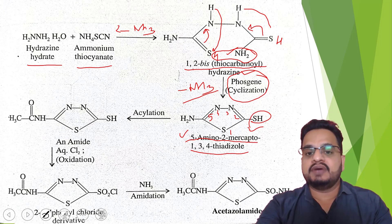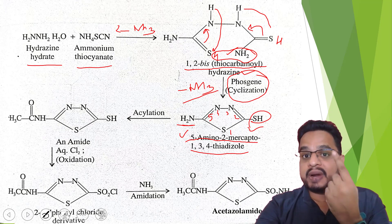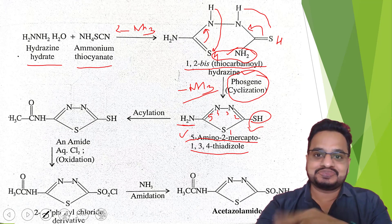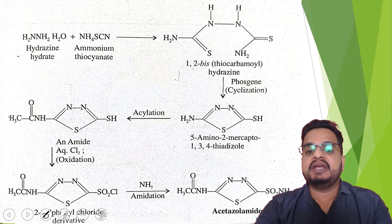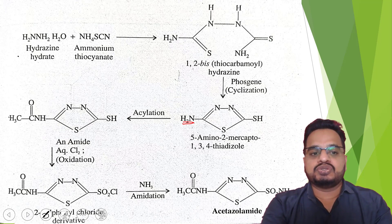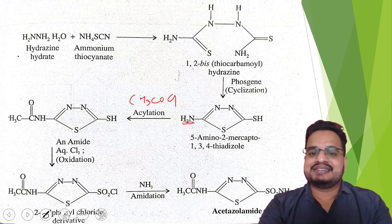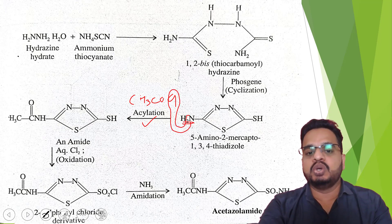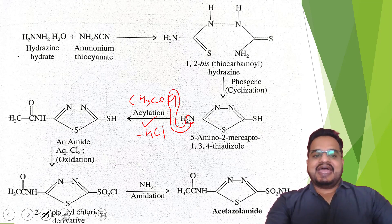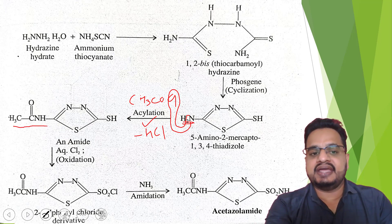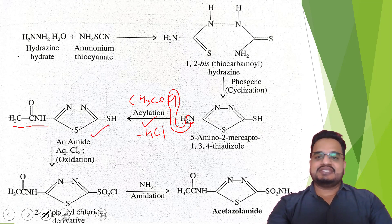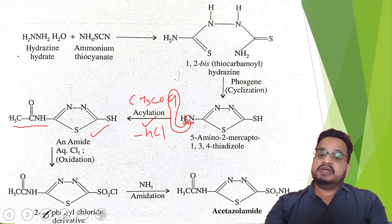Once we get this molecule, you know that at this position it is acetazolamide. Acetazolamide means two parts are remaining: one is the aceto group and the sulfonamide part. What will happen? This NH2 we have to convert into NHCOCH3. So the next reaction is with CH3COCl — acetyl chloride — acylation will take place. One proton and one chlorine will be removed in the form of HCl, and you will get CH3CONH. Like this, you will get the molecule. Now we have got the 'aceta' part.